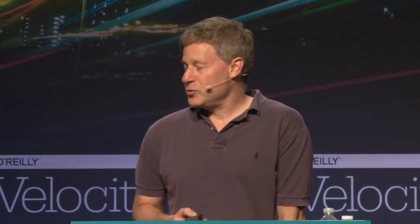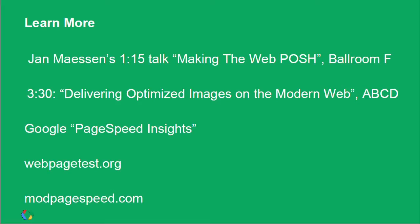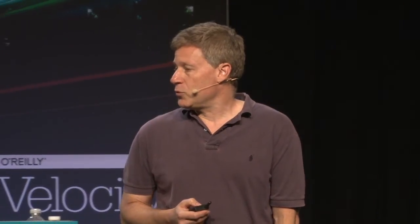Use the machines for what they're good for — doing the boring stuff. Jan Mason has a talk at 1:15 in Ballroom F on making the web fast, and I have a talk on delivering optimized images in Ballroom ABCD. Google for PageSpeed Insights to analyze your site, check out webpagetest.org. Thank you.